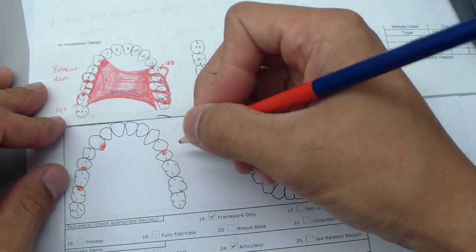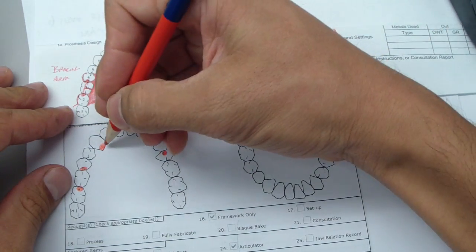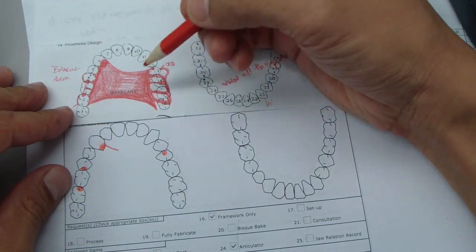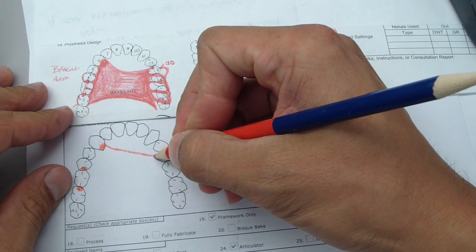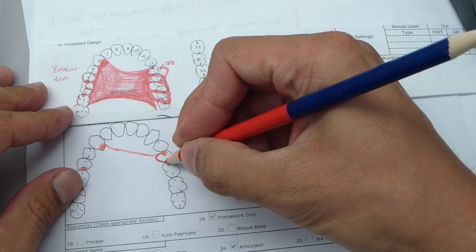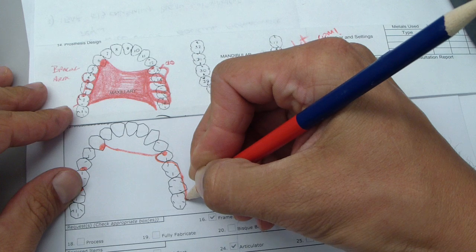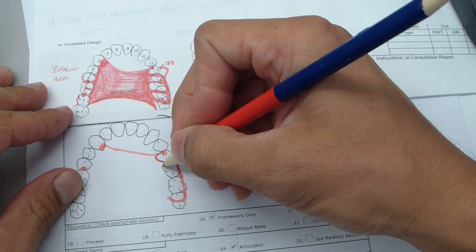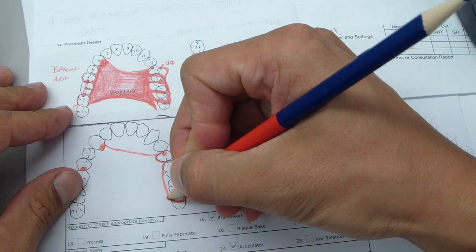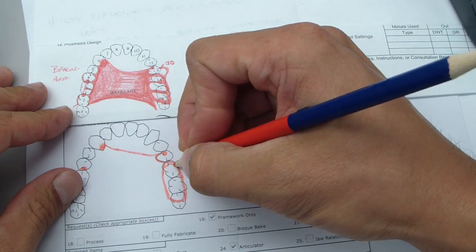Okay. And then we're going to bring this across from here, come around, then we're going to go over the edentulous ridge, come around like this, just going to join it. We're going to have some sort of linkage.